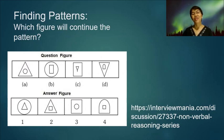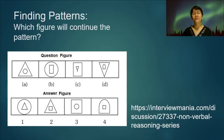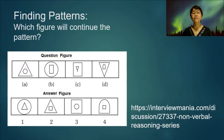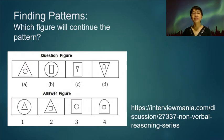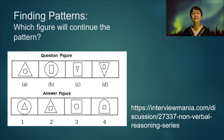In figure D, the triangle is enlarged and we have a new figure inside — a cathedral window. So we expect that in the next figure, the cathedral window will be enlarged and there will be a new figure inside. The answer is number four.